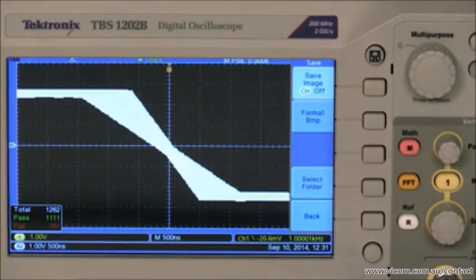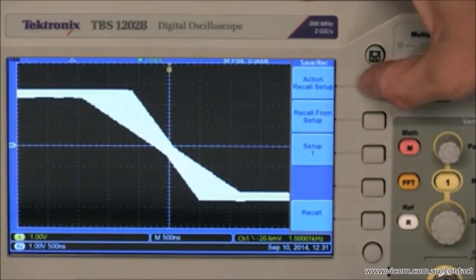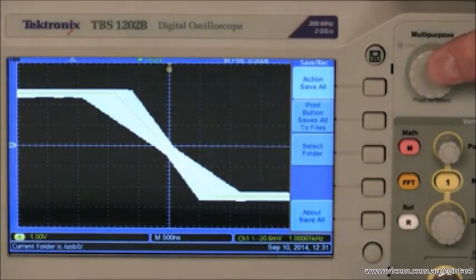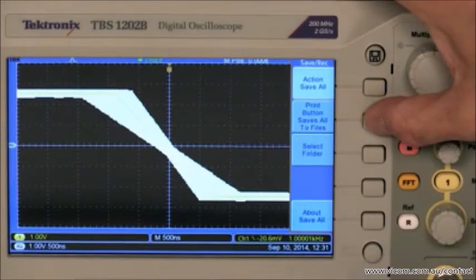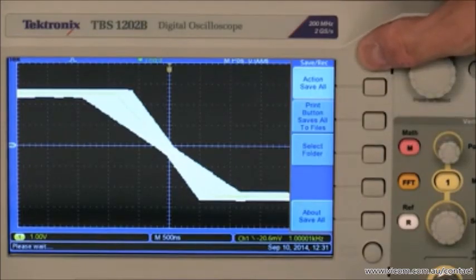You can save both the setup file and the template to a USB drive. The setup file and template can then be loaded into other TBS-1000B oscilloscopes for production testing, for example.